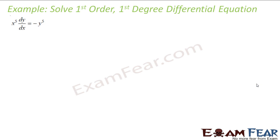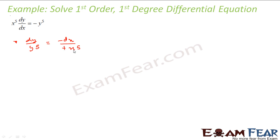Let us take one more example: x⁵ dy/dx is equal to minus y⁵ — a pretty simple question. We can say that dy/y⁵ is equal to minus dx/x⁵. So dy/y⁵ by minus 4 is equal to x⁵ by minus 4.